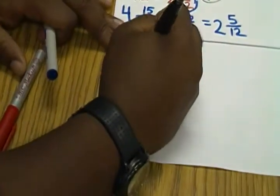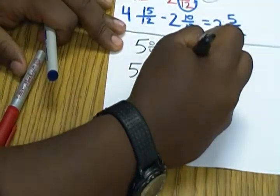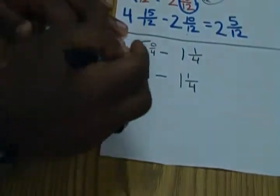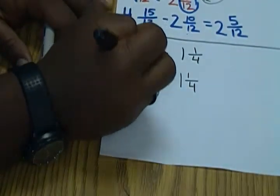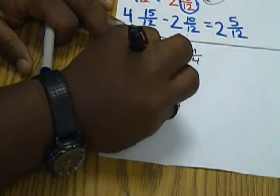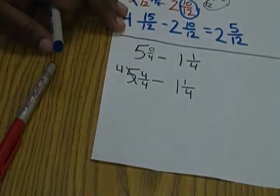The other way we could have did it is if we actually just borrow a whole already. Because essentially you're going to do the same thing anyway. So we're going to make this 4 and then we're going to bring 4/4 down. And then from there it's just a subtraction problem.